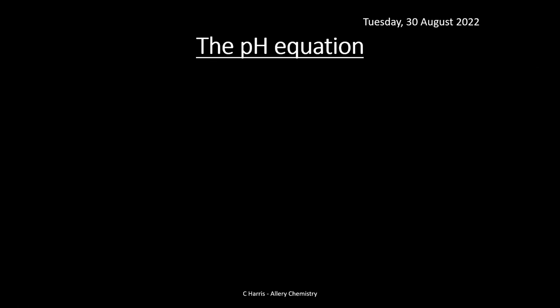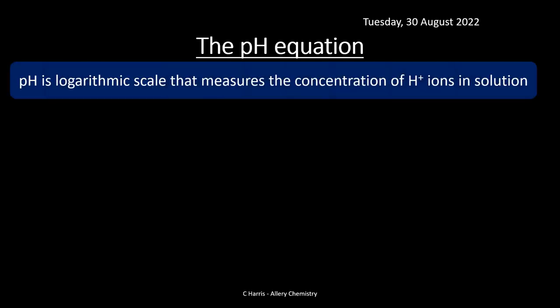We're looking at acids and bases and equilibrium, so the natural thing to move on to is pH, because that's strongly linked with acids and bases. There's quite a bit of maths in this topic — a lot of equations and formulas, as is generally the case with physical chemistry. pH is basically a logarithmic scale that measures the concentration of H+ ions in solution.